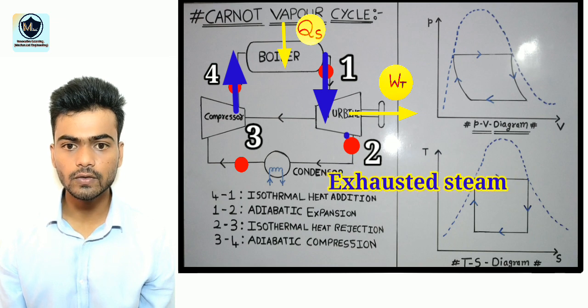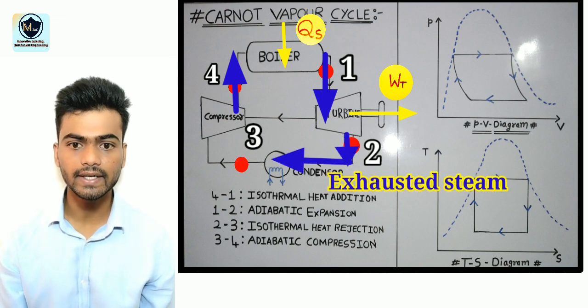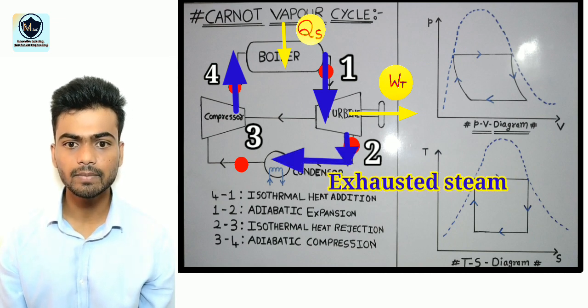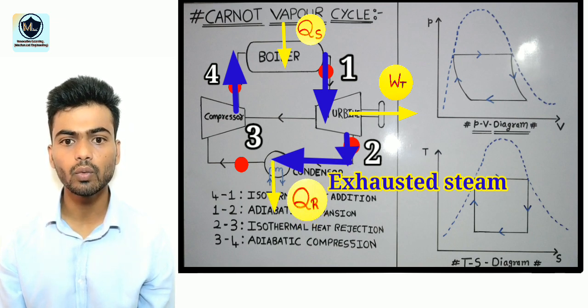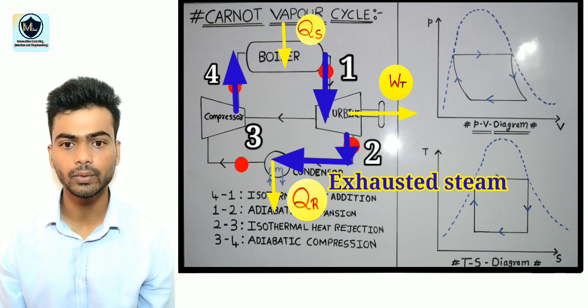The steam which is exhausted from the turbine enters the condenser where the steam is partially condensed while the heat is being rejected to the cool water which is circulated through the condenser.